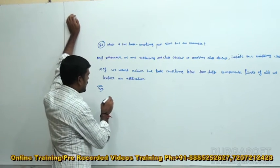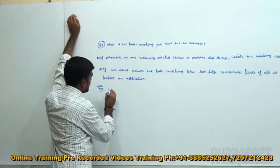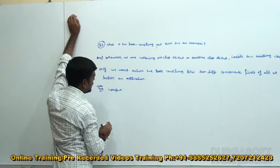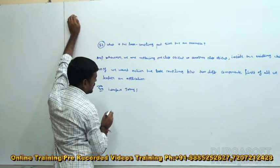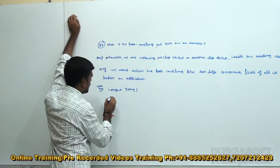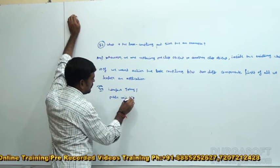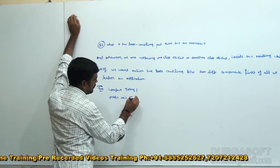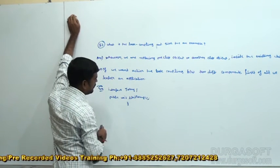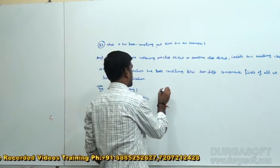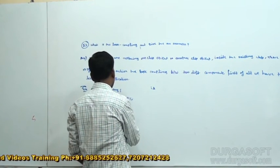We have to take here one interface first. Interface Journey. Under that, public void startJourney. Then close the method. After that, we can take another interface. This is what POJI — Plain Old Java Interface.